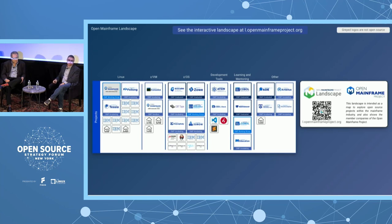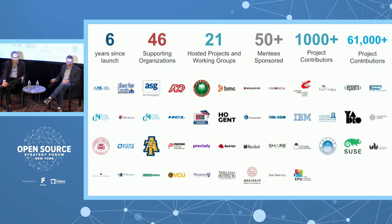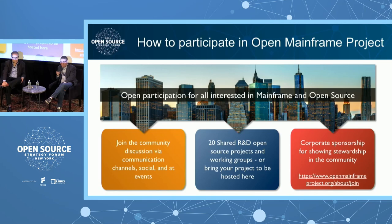There are even more open source projects centric to mainframe. Check out the landscape at l.openmainframeproject.org. These are the best-supported open source projects that run well on the mainframe today. All of this is possible because of 46 supporting organizations that see this is where the future is going, and the numbers on mentees, contributors, and contributions continue to grow exponentially. We'll soon see Citi's logo on there too.